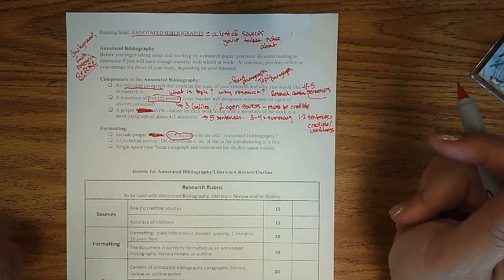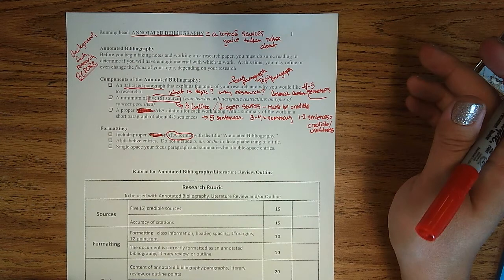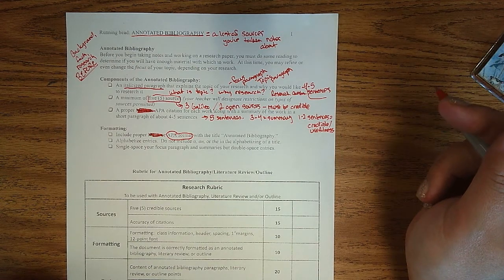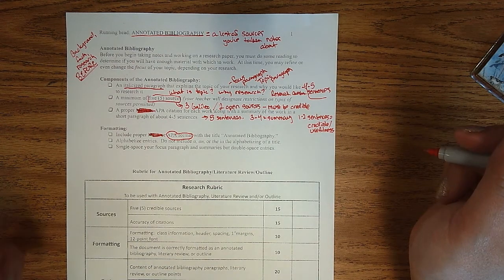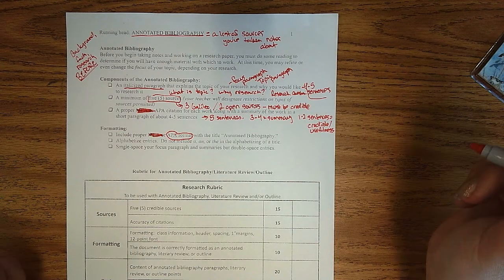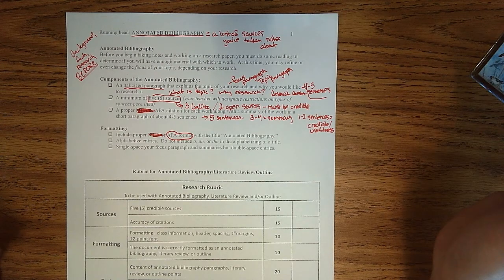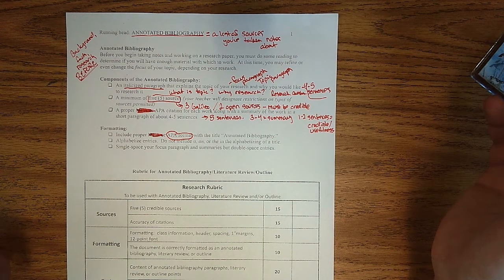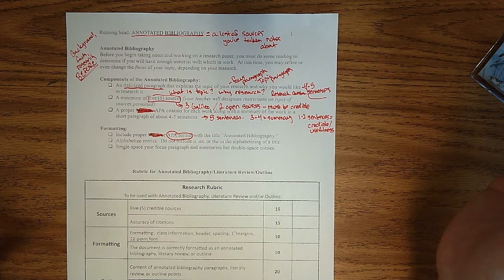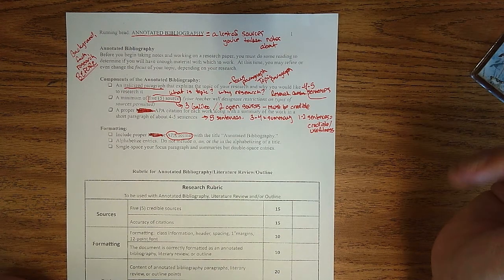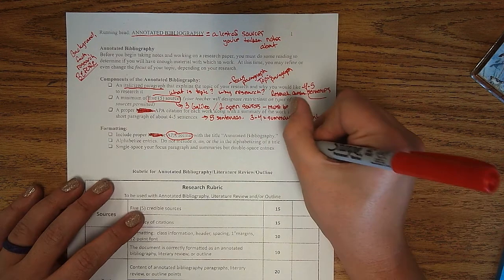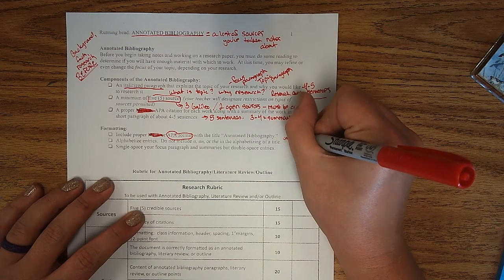So you're going to have five sources. Say, for instance, that you have a source written by Jones, Brown, and Johnson. Then Brown is going to be first because B comes before either of the J's. So you'll alphabetize by the author's last name. Usually that's author's last name.